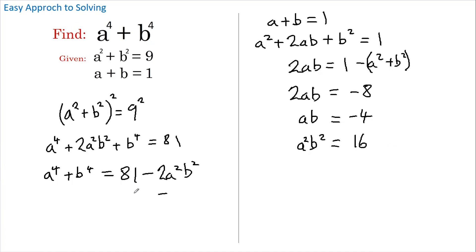Now let's go back to this where we know that our answer has got to be 81 less 2 a squared b squared. So we get 81 less 2 lots of a squared b squared, so that's 2 lots of 16 which is 81 less 32.